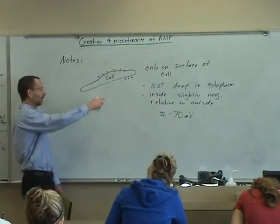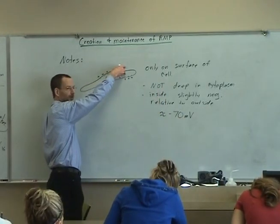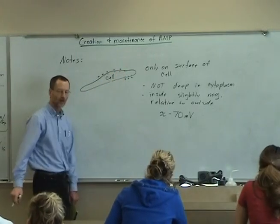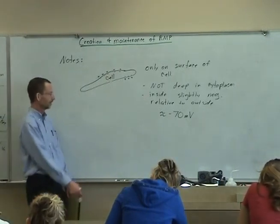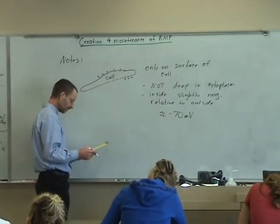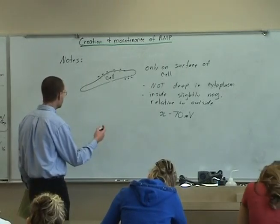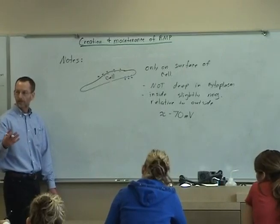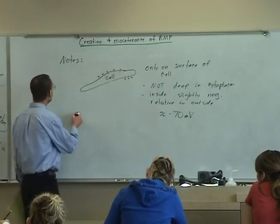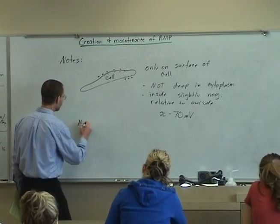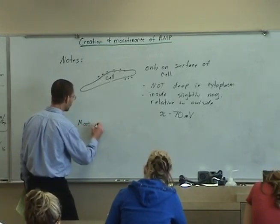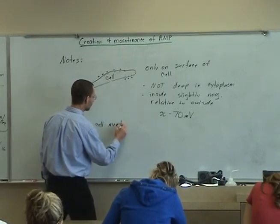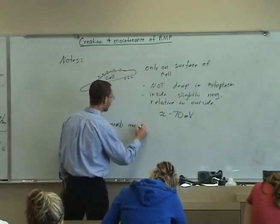So it's a difference of about 70 millivolts between the outside and the inside. And the inside is negative relative to the outside. The other thing to note is that most cells, the membrane is polarized. Most cell membranes are polarized.